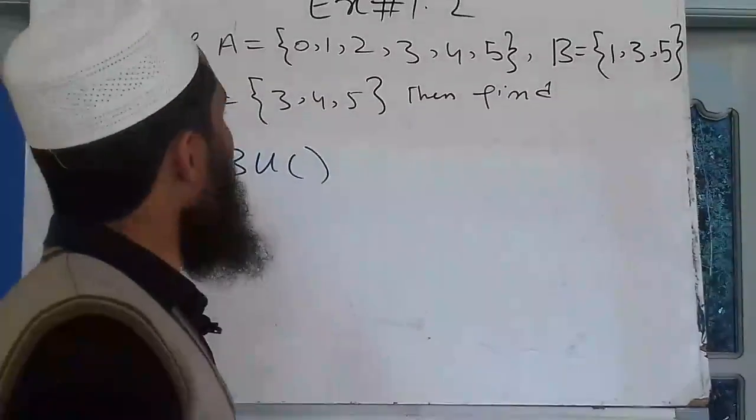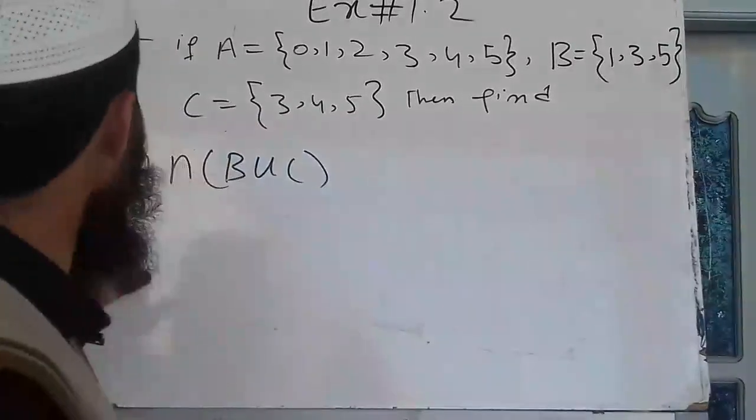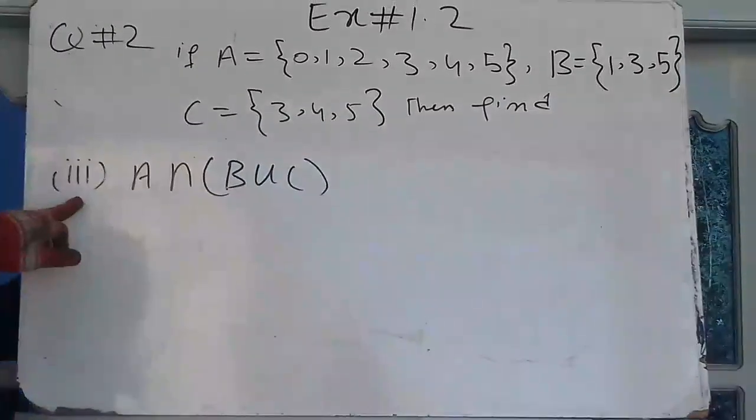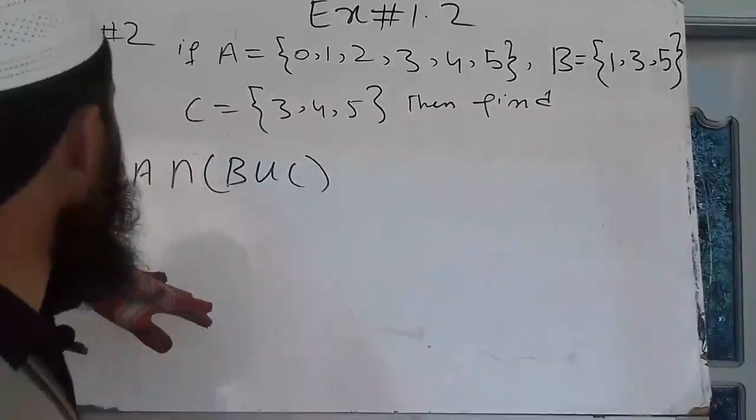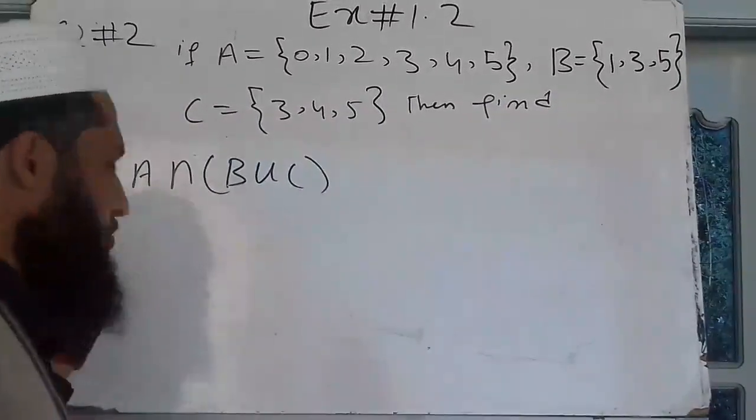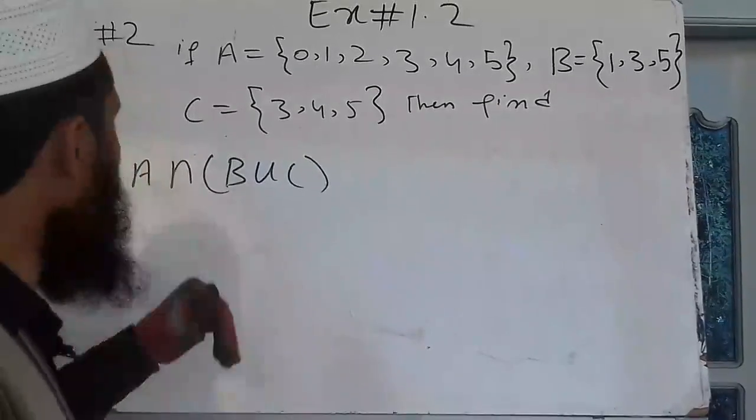That's question number three. If A is equal to {0, 1, 3, 5} and B is equal to {0, 2, 3} and a little more — but it becomes complicated.